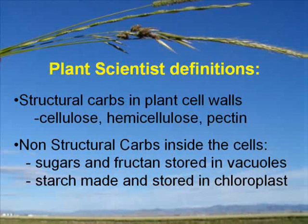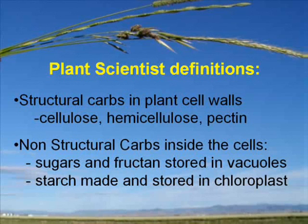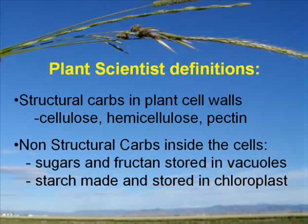The term non-structural carbs comes from plant scientists who named carbs by where they were found in a plant cell. As a plant scientist, I will admit to being partial to this rationale. Structural carbs are those found in the structural part of a plant cell — in other words, the cell wall. Structural carbs include cellulose, hemicellulose, lignin, and pectin. These are called fiber by nutritionists.